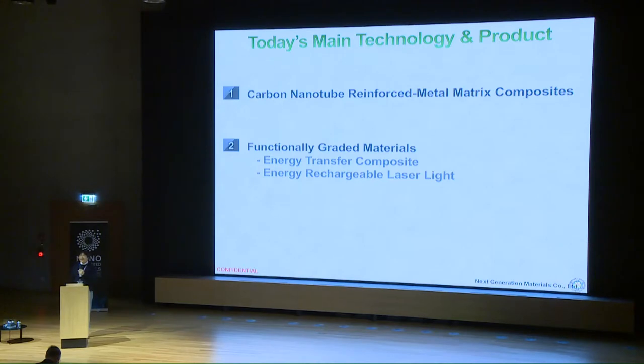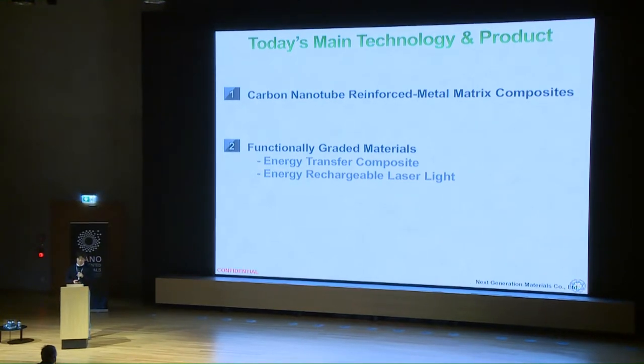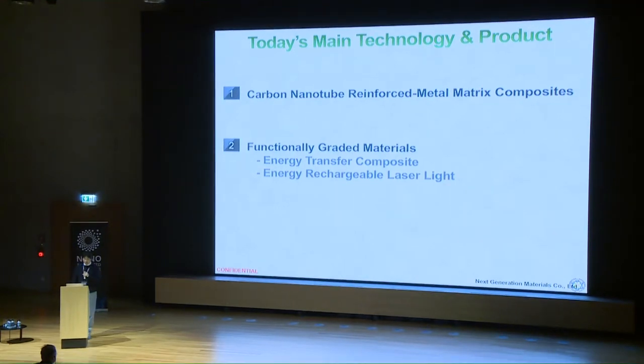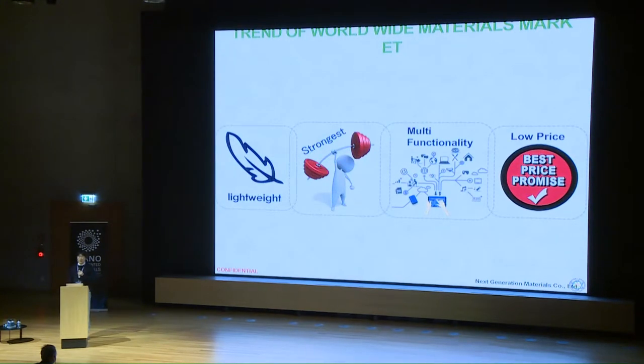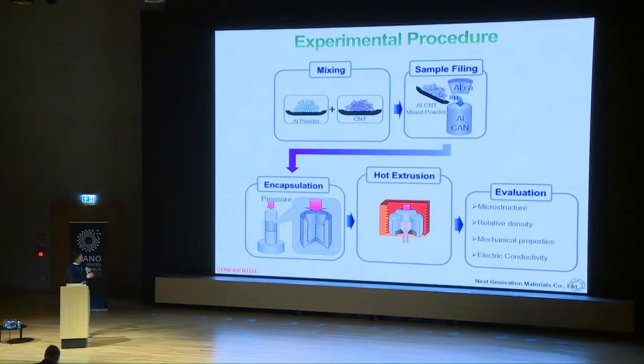I am going to introduce two interesting materials. The first is a general structural material: CNT-reinforced aluminum matrix composite, or metal matrix composite. The other is a functionally graded material reinforced by CNT, with two examples: an energy transfer composite and an energy rechargeable laser light. Materials should be light, strong, and multifunctional, and supported by a reasonable price — and this may be possible through CNT-reinforced aluminum matrix composites.